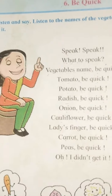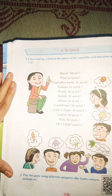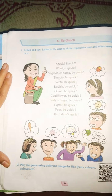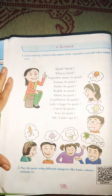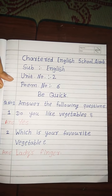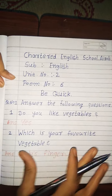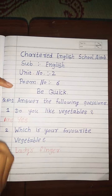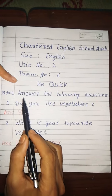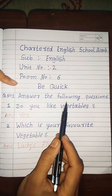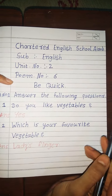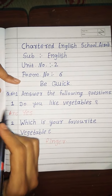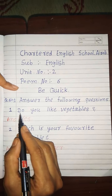Student, is tarah se hamari poem seekha ke ho chuki, puri tarah se. Abhi hum iska worksheet dekhte hain. OK? So now, student, abhi hum iska worksheet dekhte hain. OK? Question number one: Answer the following questions — matlab neeche dekho, question ka answer do. First one kya hai?